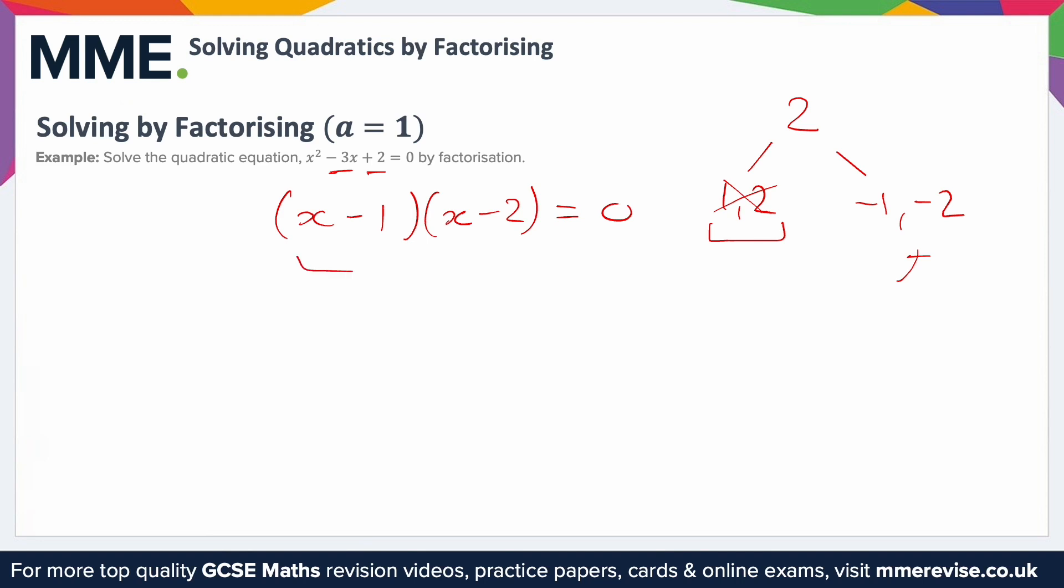To do that, you need to set each of these brackets equal to 0 like this. So we'll have x minus 1 is equal to 0, and x minus 2 is equal to 0.